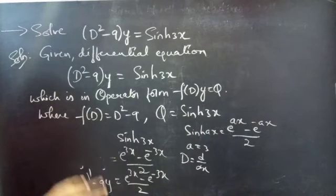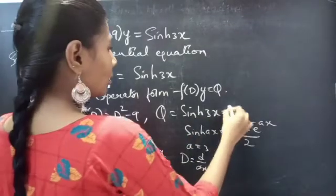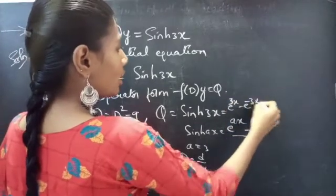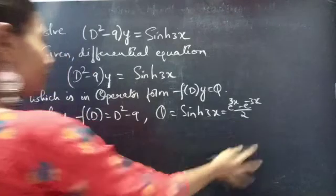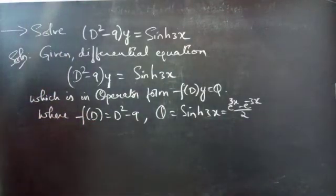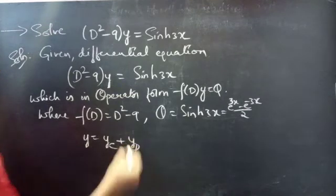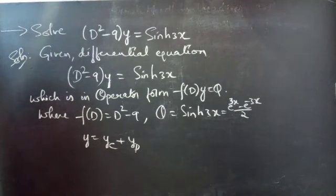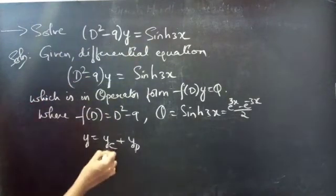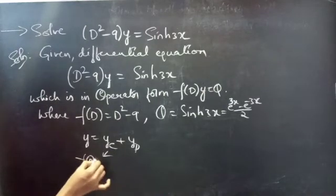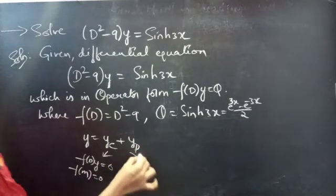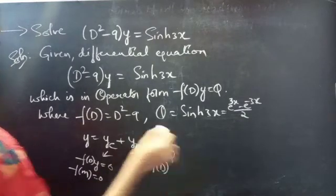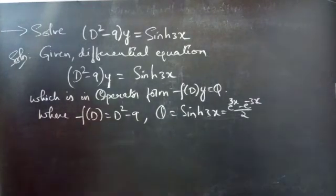Now coming to the problem. We write Q = (e^(3x) - e^(-3x)) / 2. We need to find the general solution y = yc + yp, where yc is obtained from the homogeneous equation using auxiliary equation f(m) = 0, and yp is obtained by (1/f(D))·Q.